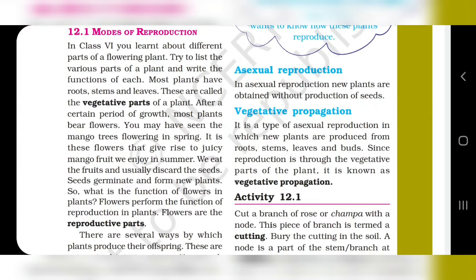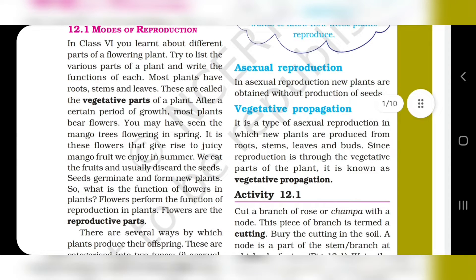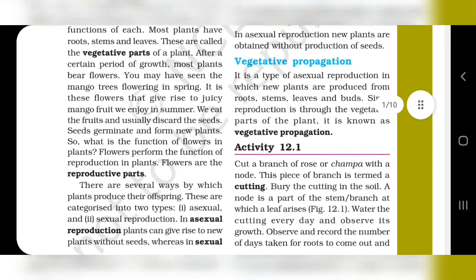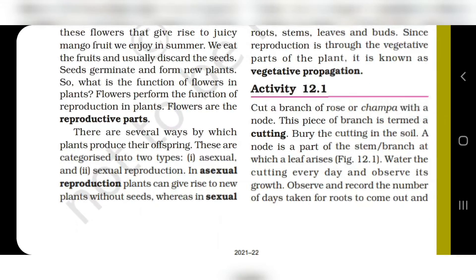Now, modes of reproduction. What are vegetative parts? Some plants have roots, stem and leaf — these are called the vegetative parts of the plant. After some period of growth, flowers also grow. Some flowers perform the function of reproduction in plants, so the flowers are the reproductive part of plants.